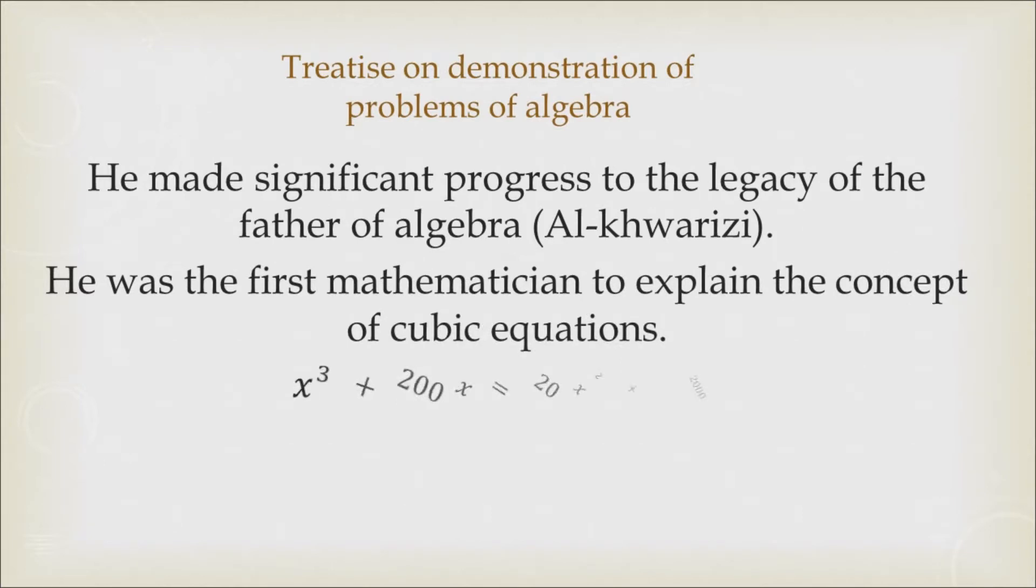His famous cubic equation that was first solved by Omar Khayyam was x³ + 200x = 20x² + 2000.